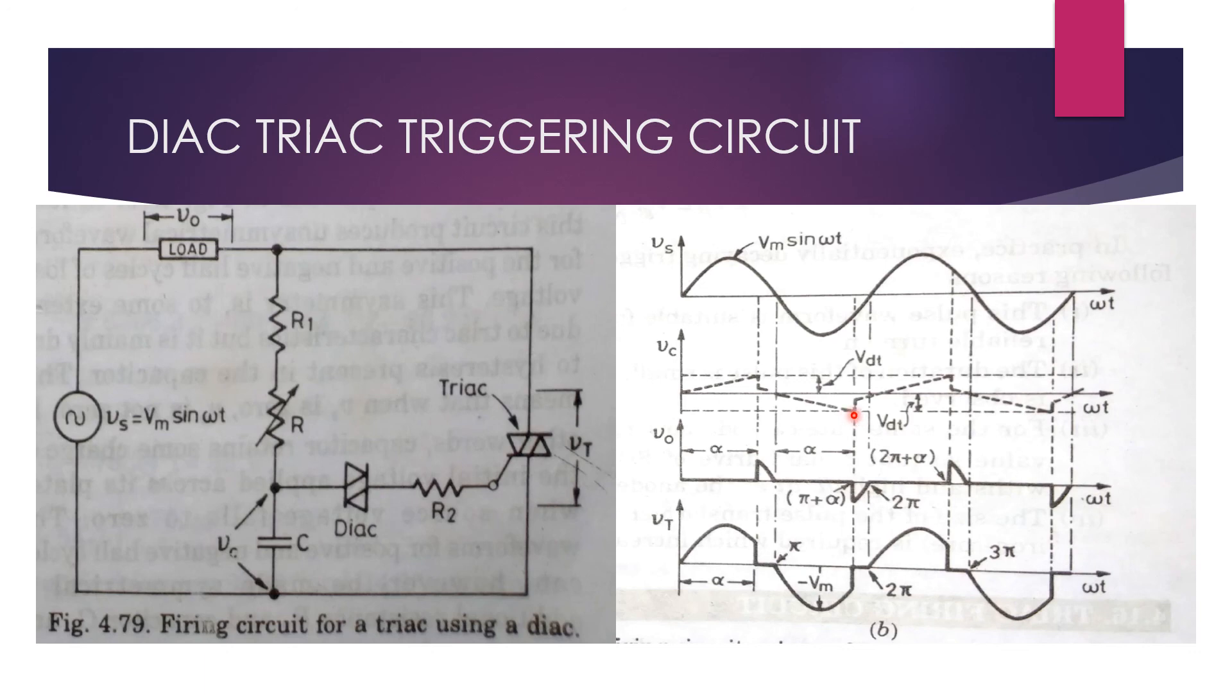When the capacitor reaches a voltage of minus VdT, the capacitor will discharge through the gate and DIAC. The TRIAC will turn on and voltage across TRIAC will be 0. The source voltage appears across the load at pi plus alpha.